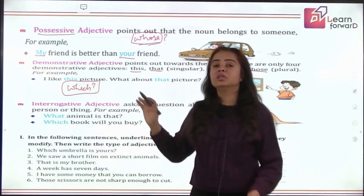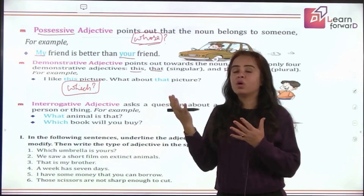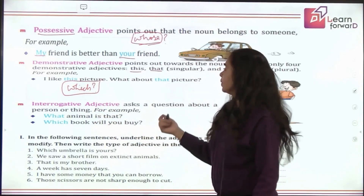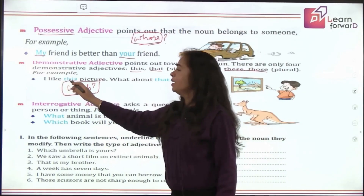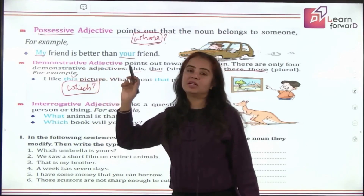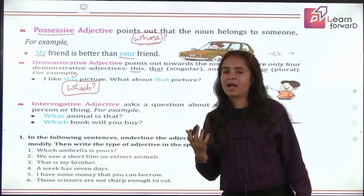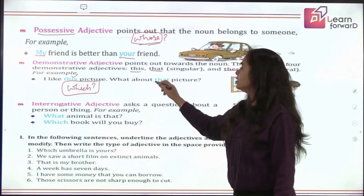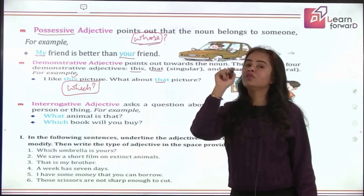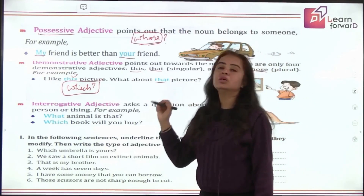'This' and 'that' are used for singular; 'these' and 'those' for plural. They are used depending on whether the thing is closer or far from you. For example: 'I like this picture' — which picture? This picture — so it's a demonstrative adjective. 'Do you like that picture?' — which picture? That picture. We are pointing out; they are pointers.